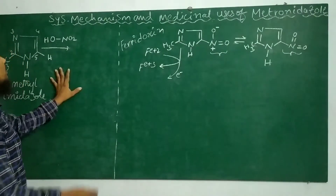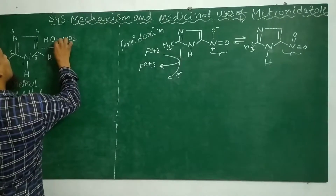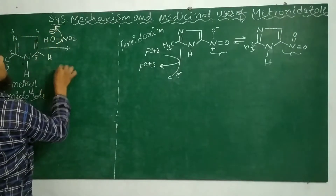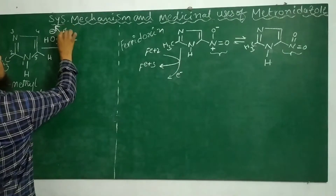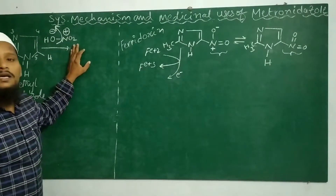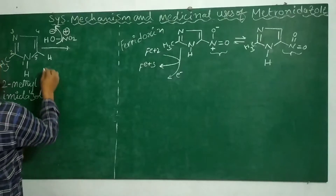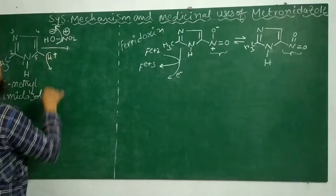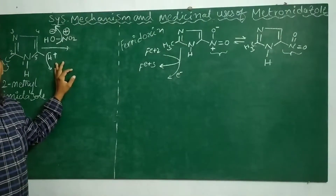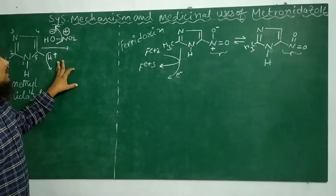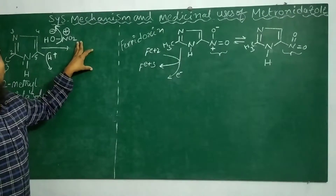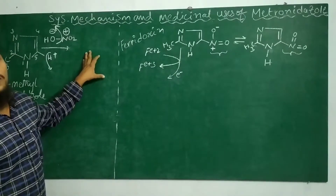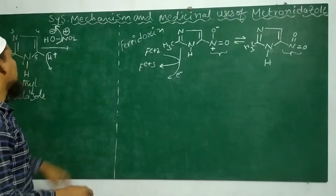It is an electrophilic substitution reaction because in nitric acid the hydroxyl group is a good leaving group — it is eliminated as OH minus, and the nitro group gets a positive charge, making it an electrophile. From the imidazole ring, hydrogen is eliminated in the form of a proton (H+), and this H+ electrophile is replaced by the NO2 electrophilic group.